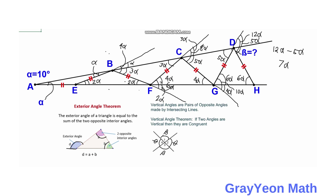We notice that 7 alpha is the angle we are looking for. Beta is equal to 7 alpha, and since alpha is 10 degrees, beta is equal to 7 times 10 degrees, which is 70 degrees. That is our answer.